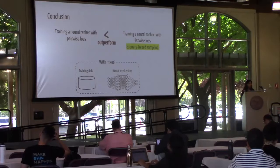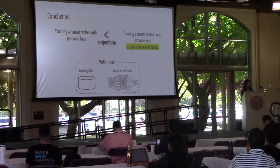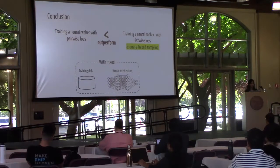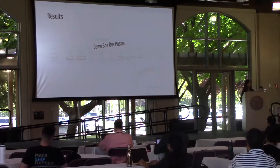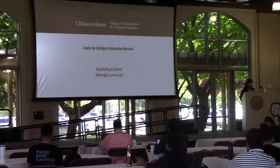The conclusion is that given a fixed neural architecture and fixed training data, training a ranker with the list-wise loss function and query-based sampling significantly outperforms one trained with the pair-wise loss function. For detailed results about performance improvement and gradient behavior, please come see our poster. Thank you.